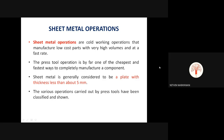Sheet metal operations are cold working operations used to manufacture low cost parts when required in very high volumes and at fast rates. Sheet metal is generally considered to be a plate with thickness less than about 5 mm. If the thickness is more than that, we call it a plate.